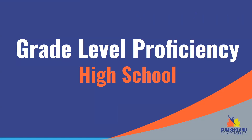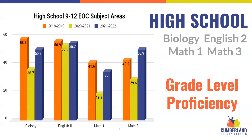Shifting to high school proficiency levels, those levels are calculated using high school math, English 2, and biology results. The graph shows each of the four subject areas. The largest increases for high school also occurred in math — Math 1 saw an increase of 15.8 percentage points, and high school Math 3 saw the greatest increase of 21.3 percentage points.